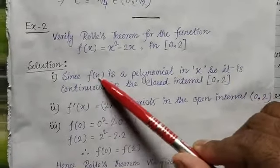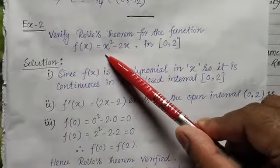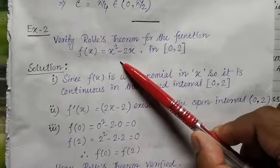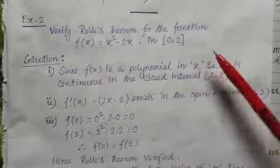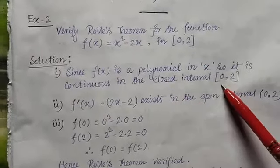So similarly, first statement: since f(x) is a polynomial - polynomial means expression of x - so it is continuous everywhere as we discussed earlier. Since f(x) is a polynomial in x, it is continuous in the closed interval [0, 2]. Done.